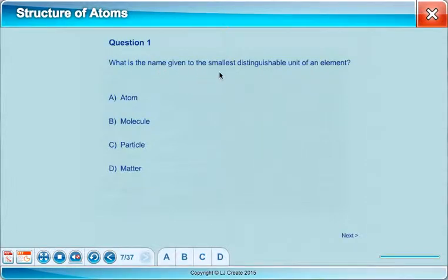Question. What is the name given to the smallest distinguishable unit of an element? Atom, molecule, particle, or matter? We're going to pause for a second. Right answer. Atom. Nailed it.